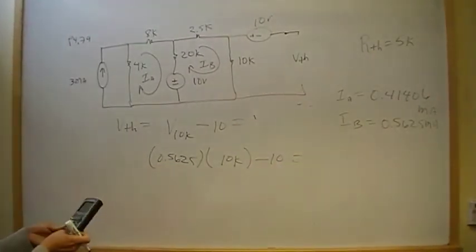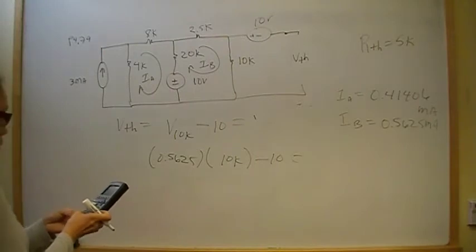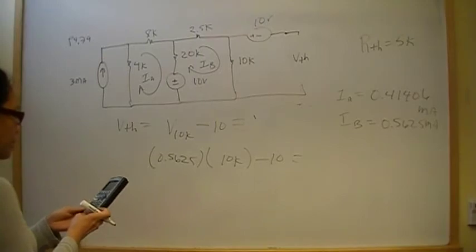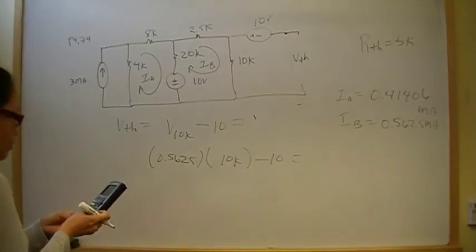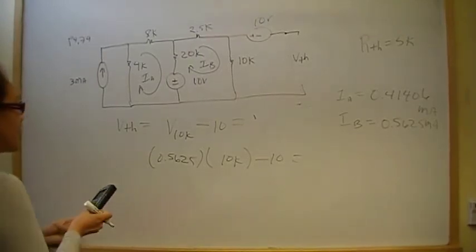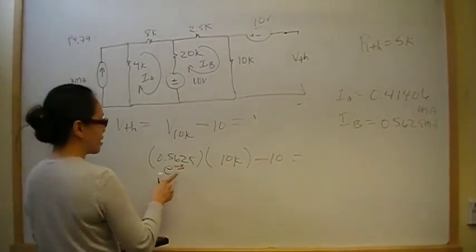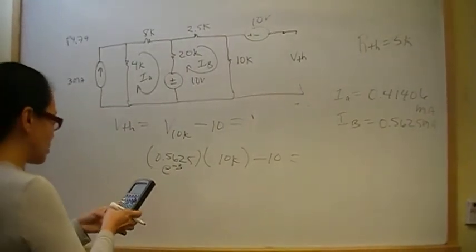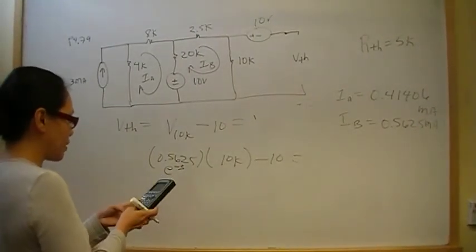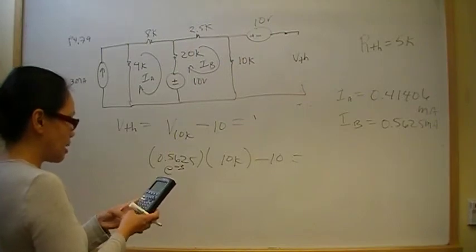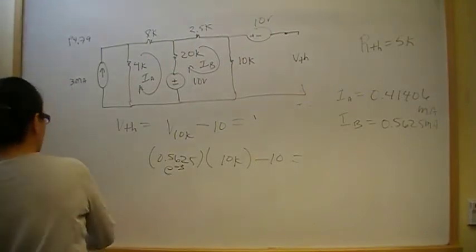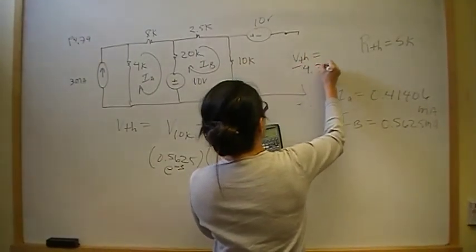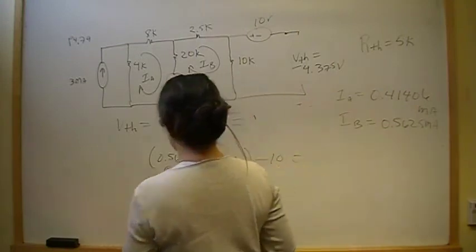V_10k = 0.5625 mA × 10k = 5.625 V. Therefore V-Thevenin = 5.625 − 10 = −4.375 volts. So V-Thevenin equals negative 4.375 volts.